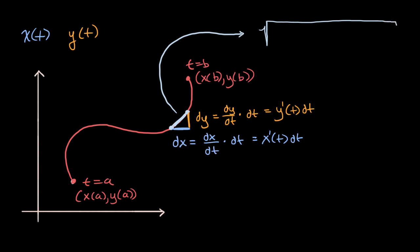So the stuff in blue squared, dx squared, we could rewrite that as x prime of t dt squared plus this squared, which is y prime of t dt squared. And now let's just try to simplify this a little bit.